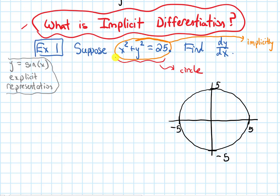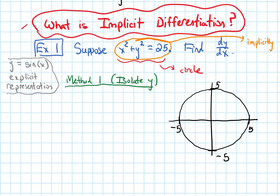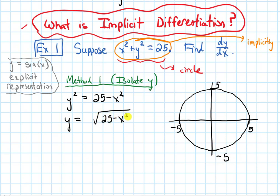So to take this derivative, one strategy — I'm going to call this Method 1 — is to get it to a point where we can isolate the y. That gets it into a form we can take the derivative of. If we isolate y, we get y squared equals 25 minus x squared, and then I'd have to square root this. Anytime I take an even root on both sides of an equation, I've got to put a plus or minus.